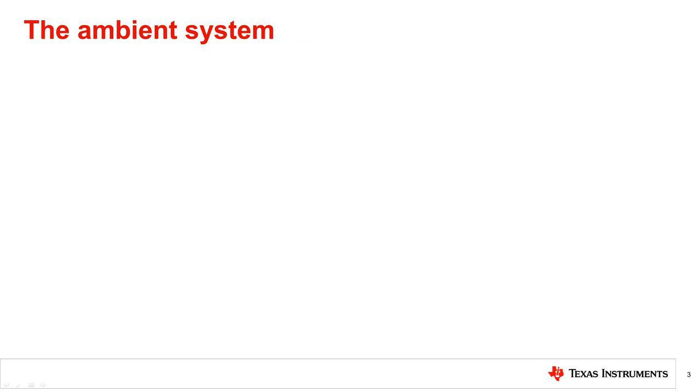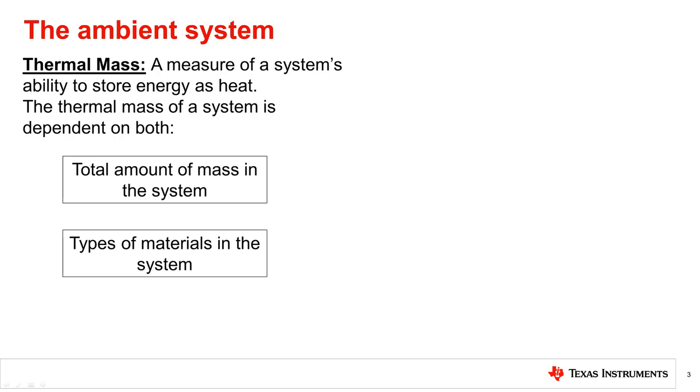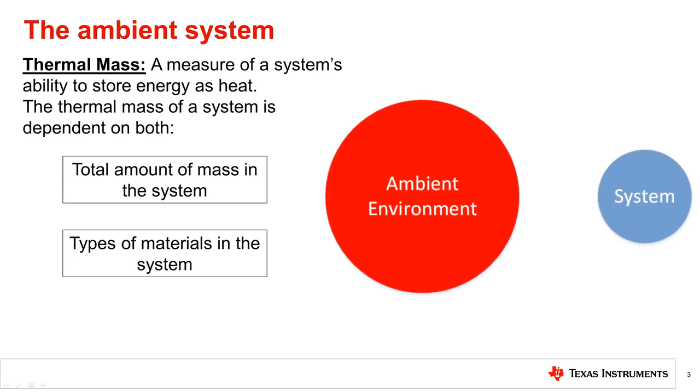To better understand ambient temperature measurements, we need to understand the thermal characteristics of the ambient system and their relationship to each other. The most important of these is the concept of thermal mass, which is the ability of a system to store energy as heat. This depends on both the amount of mass and types of material in the thermal system. In most cases, we have an ambient environment that has significantly greater thermal mass than the system we are using to monitor it.